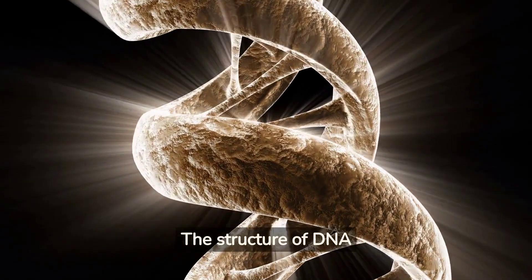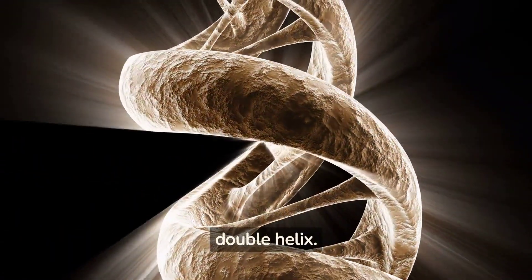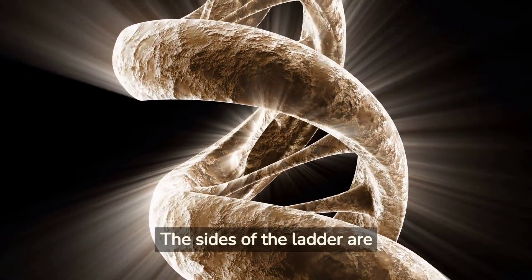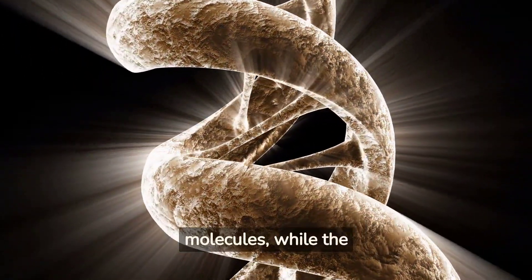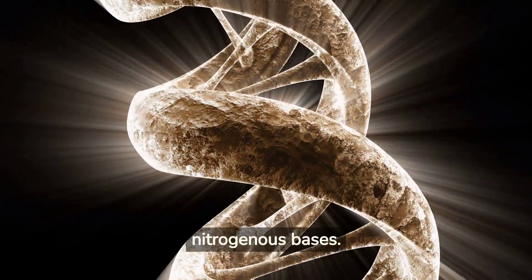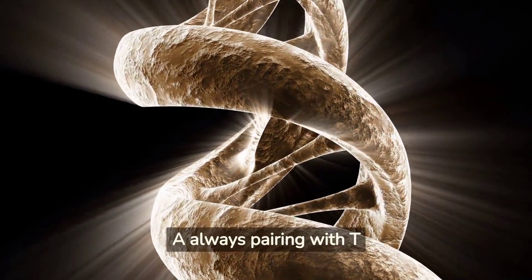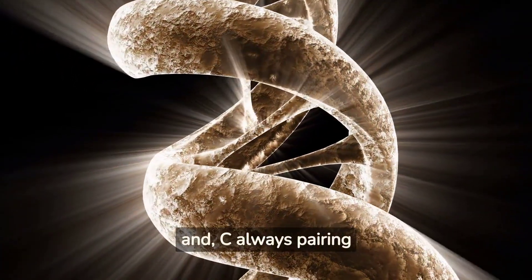The structure of DNA is often described as a twisted ladder, or a double helix. The sides of the ladder are made up of the sugar and phosphate molecules, while the ladder rungs are composed of nitrogenous bases. The bases pair up in a specific way, with A always pairing with T and C always pairing with G.